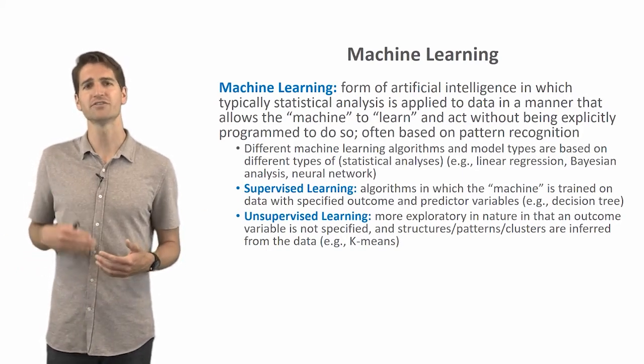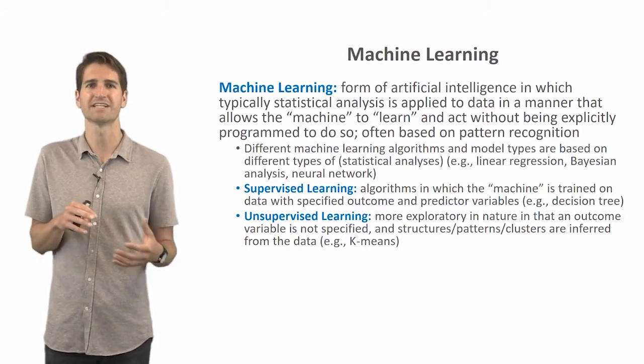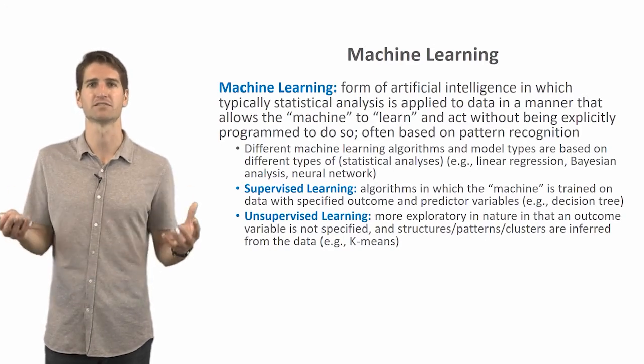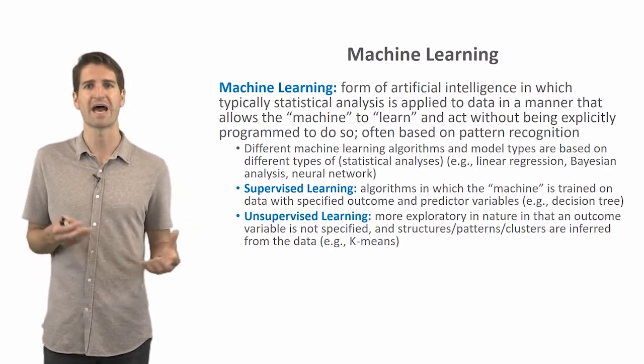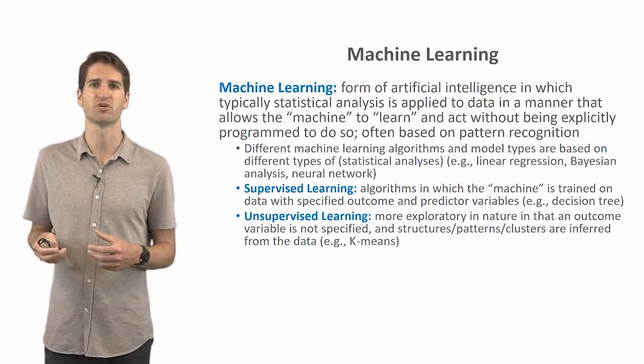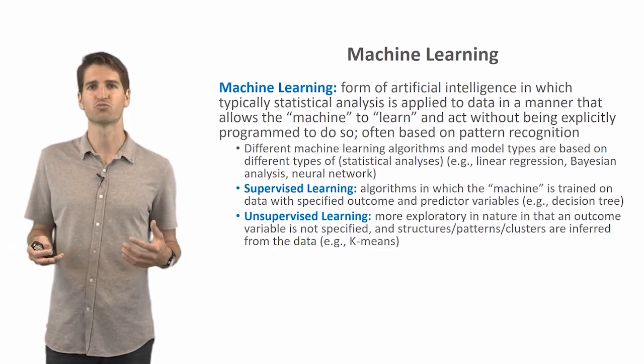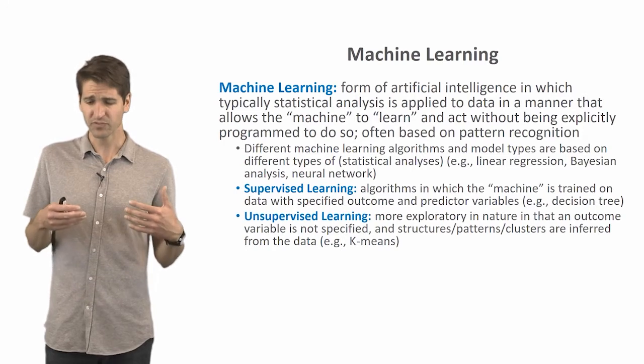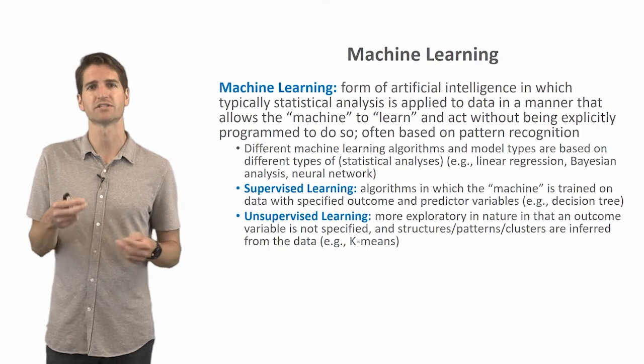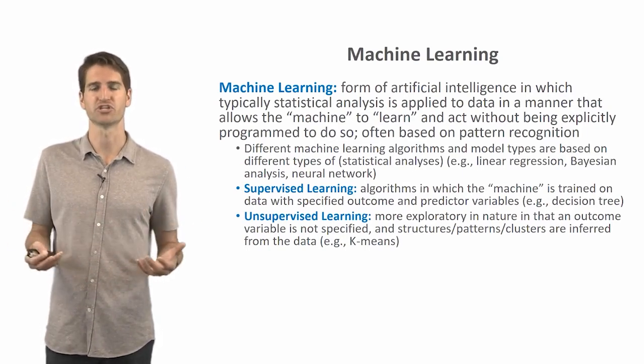Now, moving on to unsupervised learning, these tend to be more exploratory in nature, in that an outcome variable is not specified. And really what we're looking is to find things inductively here. So what are the structures and patterns and clusters that might be inferred from the data? So k-means is an example of a type of unsupervised machine learning analysis we might engage in, as well as some types of principle components analysis and so forth. So again we can distinguish between supervised and unsupervised learning within the bucket or within the broader topic of machine learning.